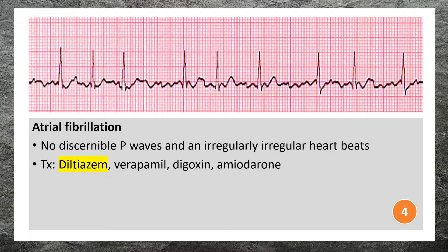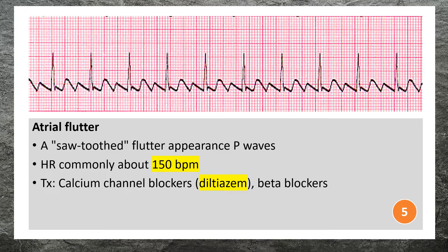Anticoagulant therapy may be necessary to prevent the formation of blood clots in the atria, which can lead to stroke. Atrial flutter is a supraventricular arrhythmia that is usually about 150 beats per minute.